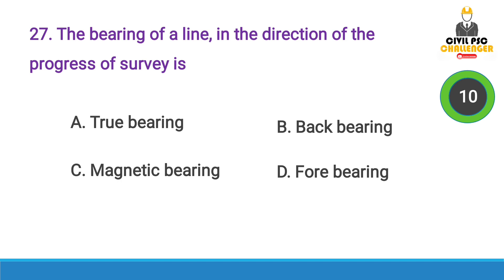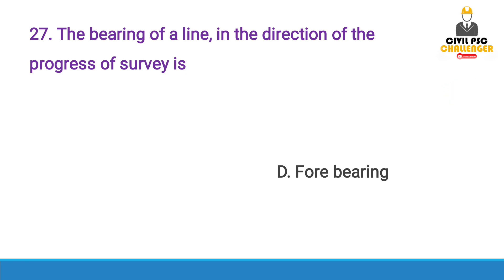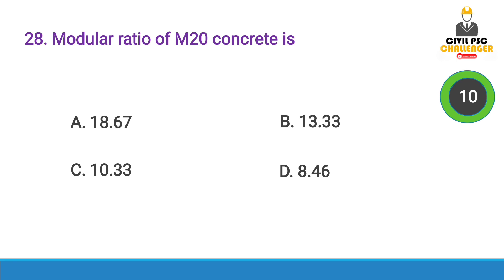Next question: The bearing of a line in the direction of the progress of a survey is — Answer option D, Fore Bearing.